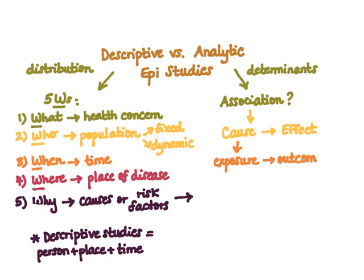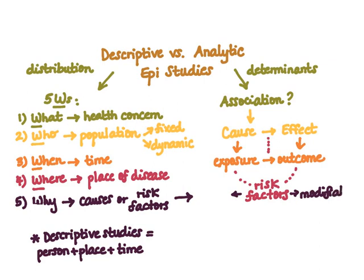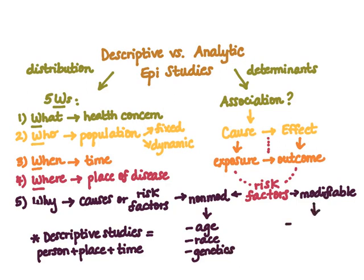This isn't always a simple two-factor equation — sometimes we have risk factors or confounding factors that may obscure this relationship. We define two types of risk factors. Non-modifiable risk factors are things you cannot change — things you are born with, such as your age, sex, race, and genetics. Modifiable risk factors are things you can change, for example your diet, your smoking status, and your environment to some extent.